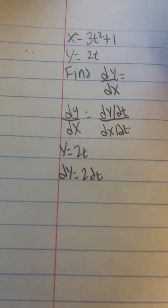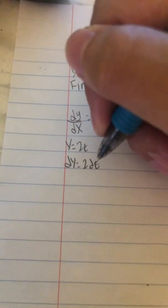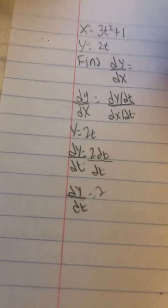We know that dy is 2dt, so you just divide by dt on both sides. So dy dt is 2.